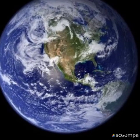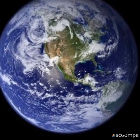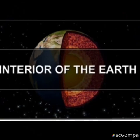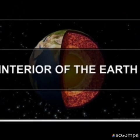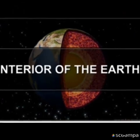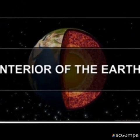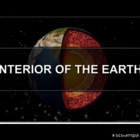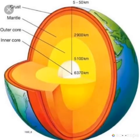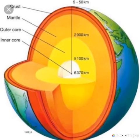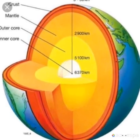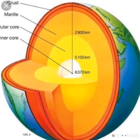Interior of the Earth: Just like an onion, the Earth is made of several concentric layers. The uppermost layer over the Earth's surface is called the crust. It is the thinnest of all the layers — about 35 km on the continental masses and only 5 km on the oceanic floors.